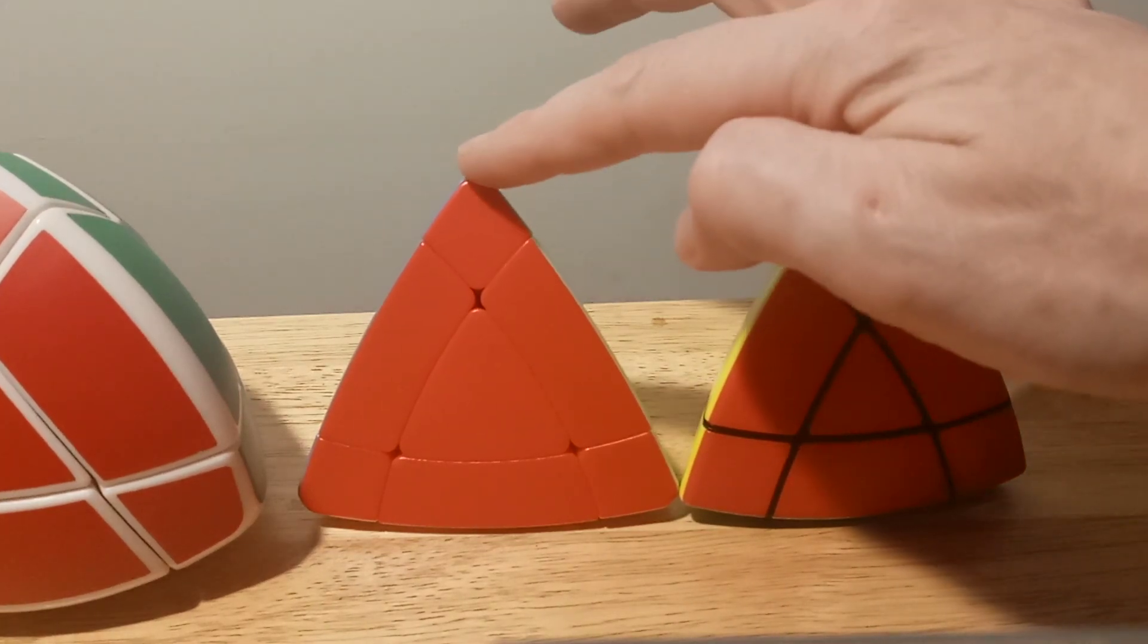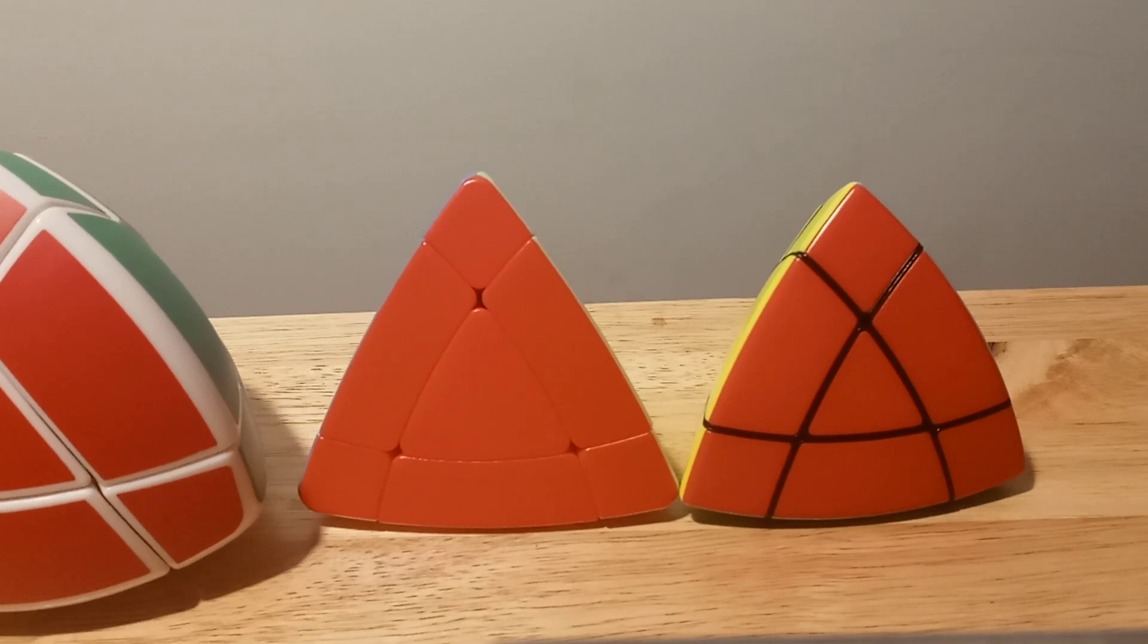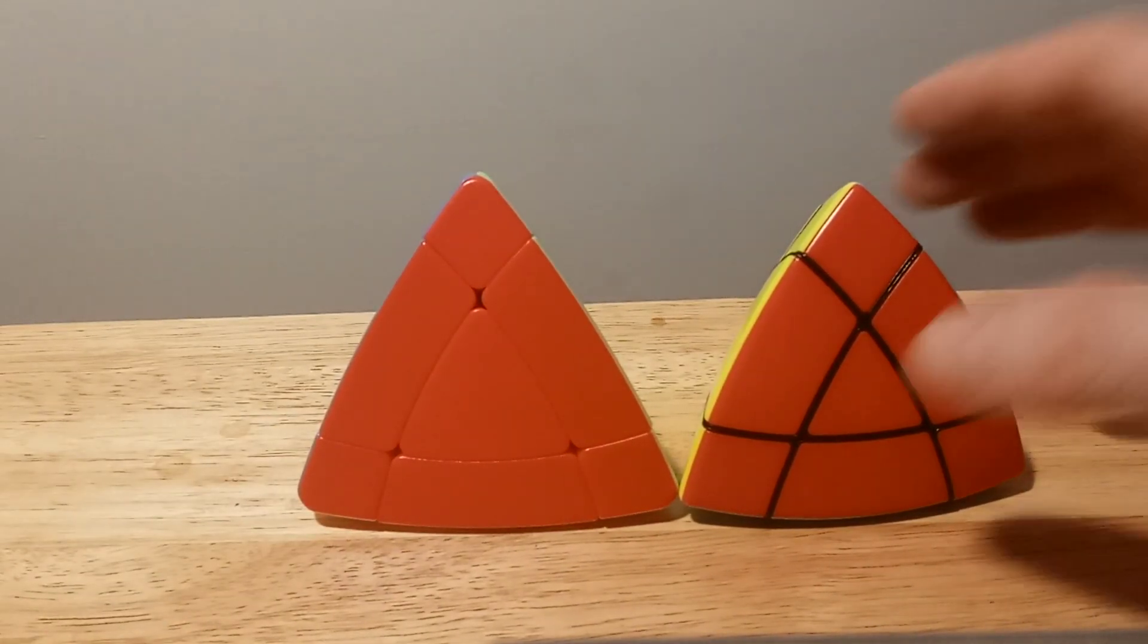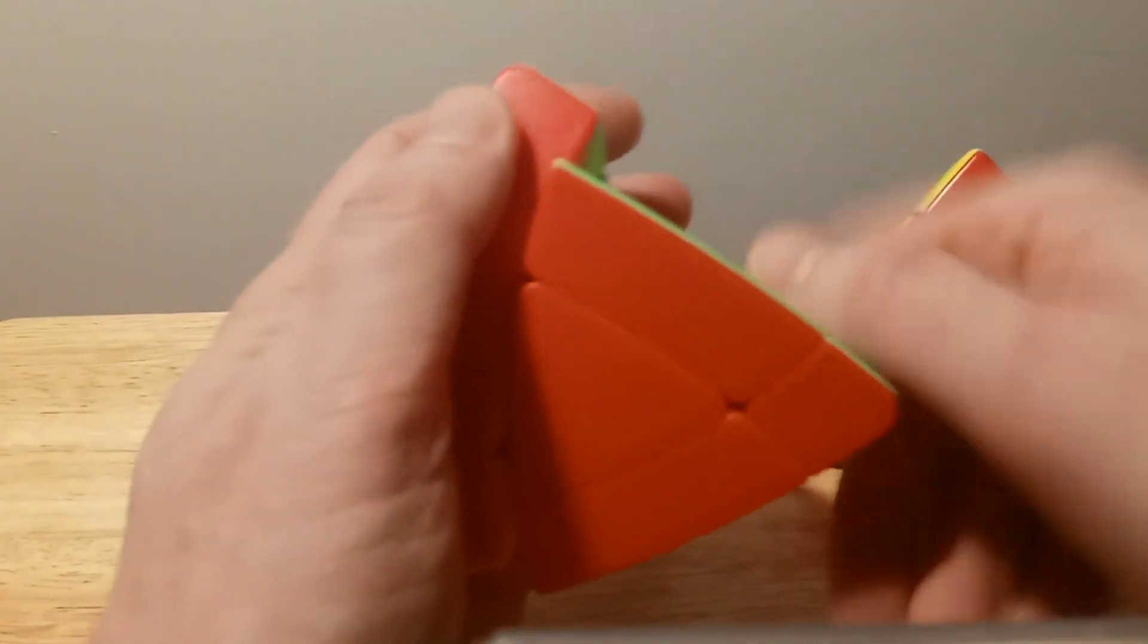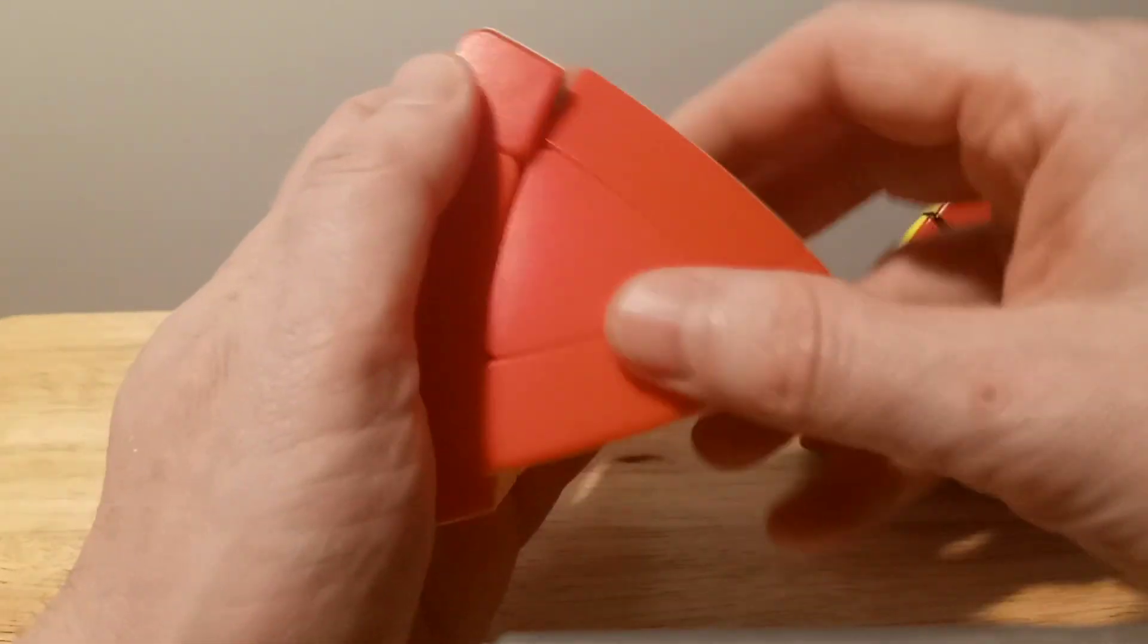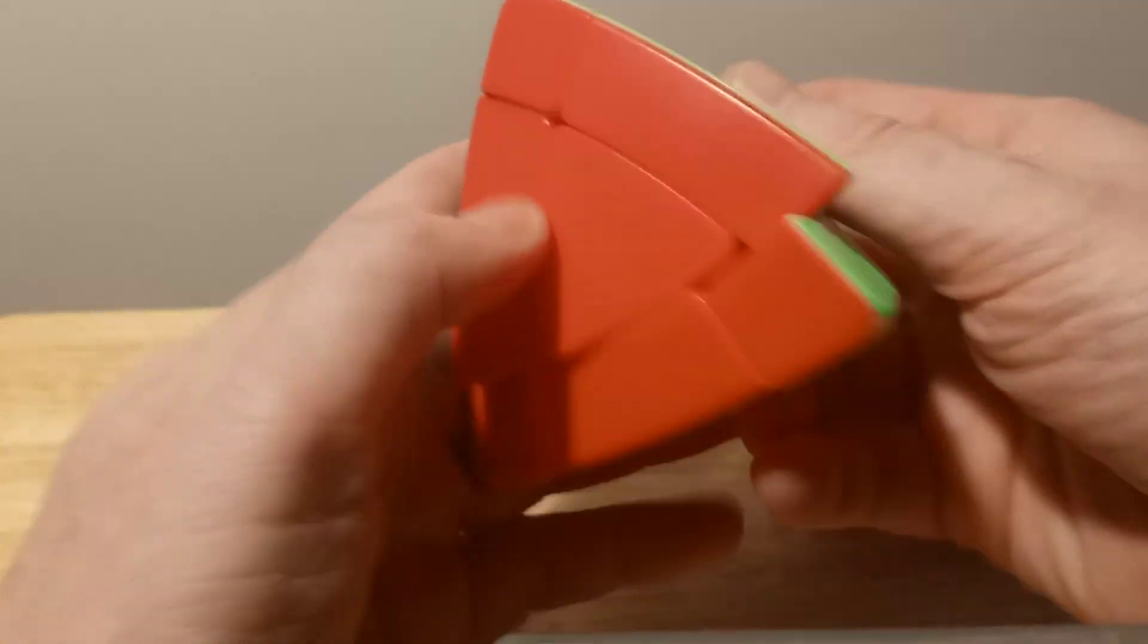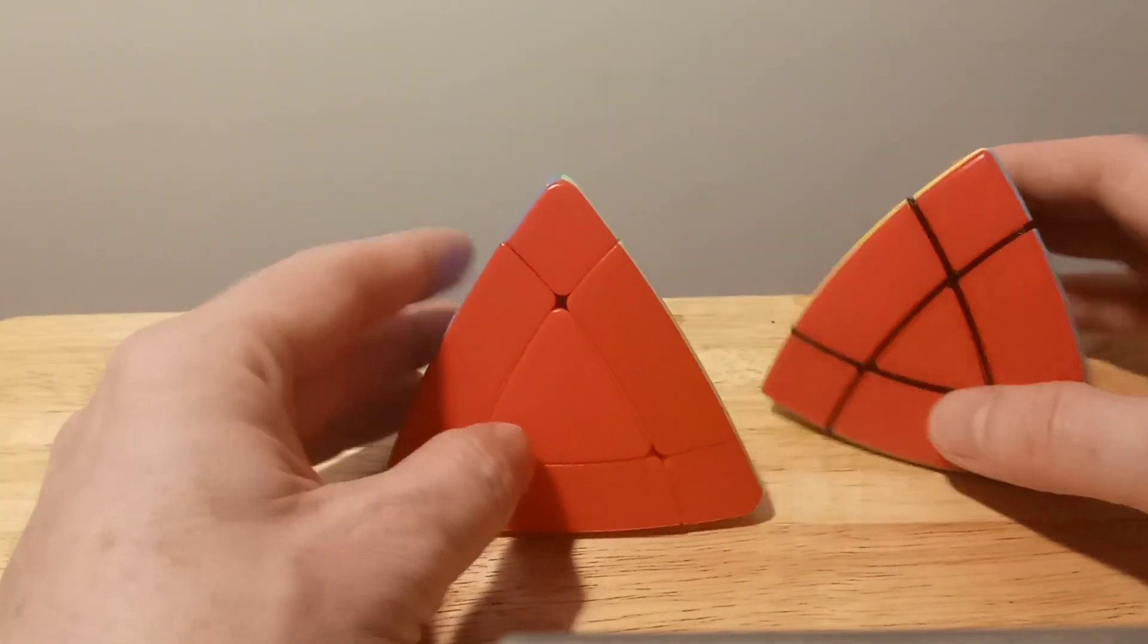This is the Jing Paraminx. It came out probably a couple months ago. The Jing Paraminx is pretty much about the same thing, but it turns super smooth, I mean super smooth. It's effortless altogether. But it doesn't have the clicking mechanism. That's the only difference.